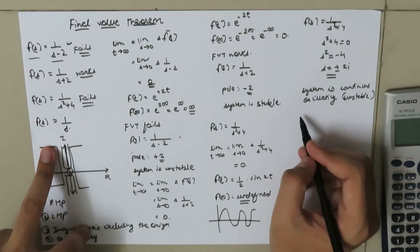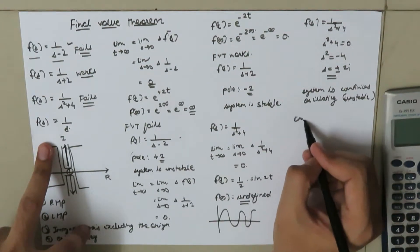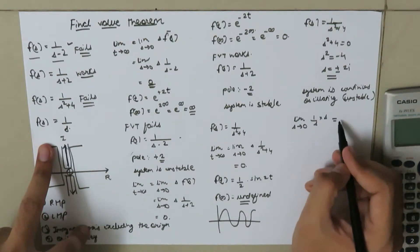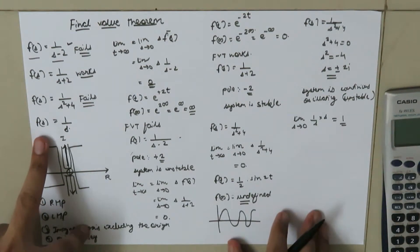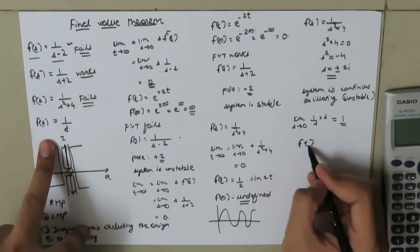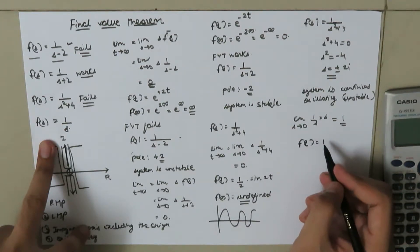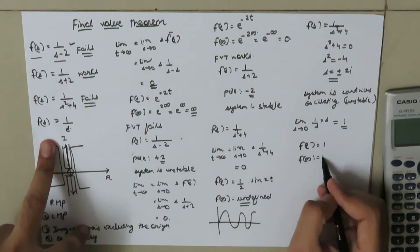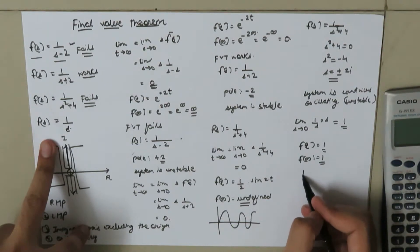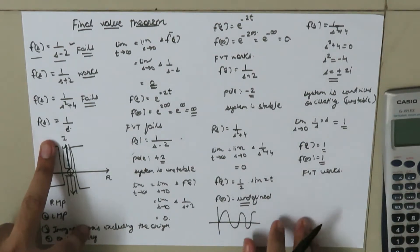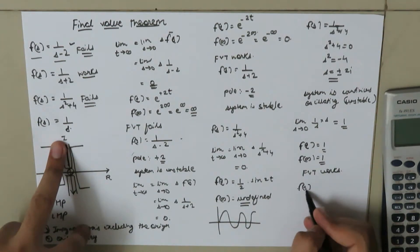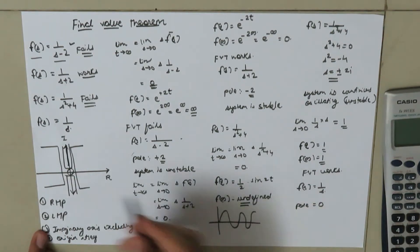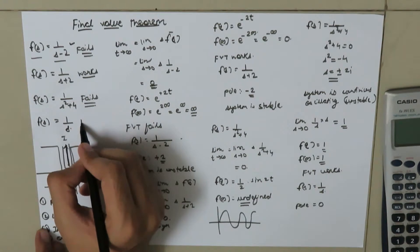For the fourth transfer function F(s) equal to 1 over s, applying the final value theorem gives: limit as s tends to 0 of s times (1/s) equals 1. Taking the inverse Laplace transform also gives f(t) equal to 1, so f(infinity) equals 1 as well. The final value theorem works here because the pole is at 0, which lies on the origin itself.